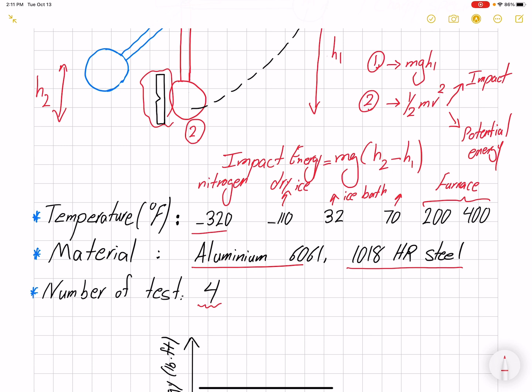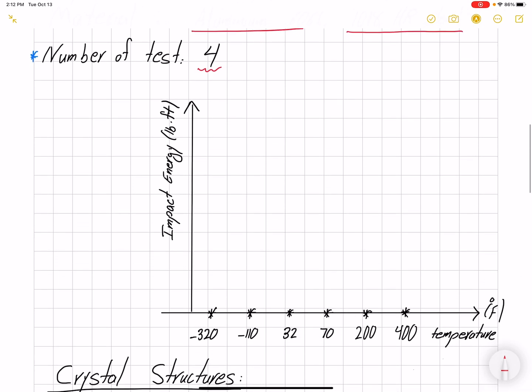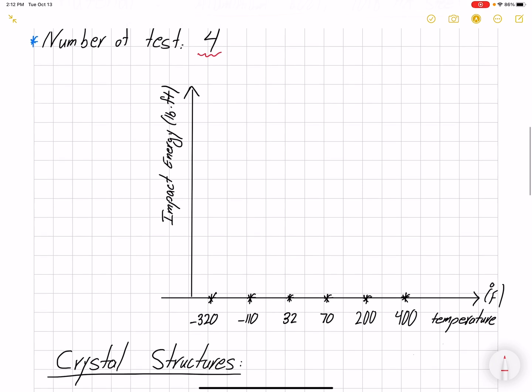Then we can plot the impact energy as a function of temperature. Remember, we have two materials, so you can plot both on the same figure. For each test we have four data points.